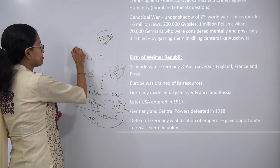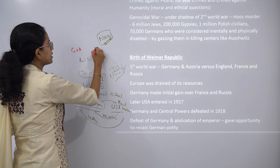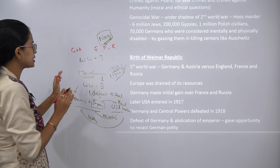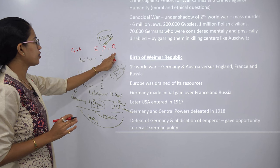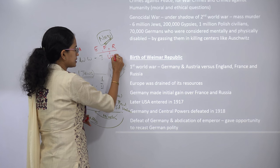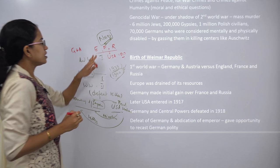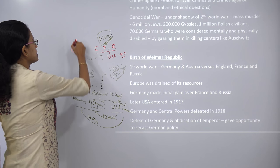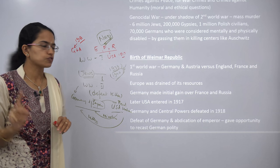During World War I, Germany along with Austria was on one side, and England, France and Russia were on the other side. Initially Germany defeated France and Russia, but later England, France and Russia were supported by the United States. When the United States entered in 1917, the defeat of Germany started, and finally Germany and all the central powers got defeated in 1918 in the First World War.